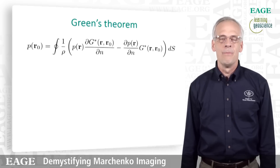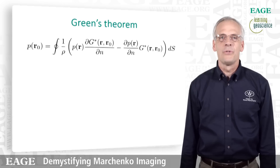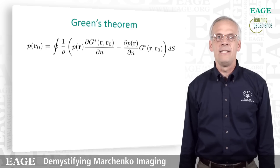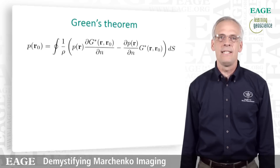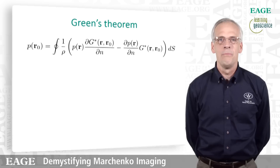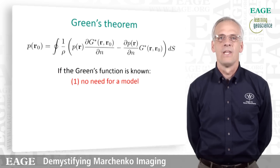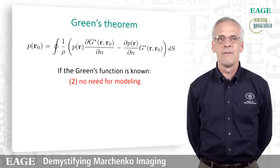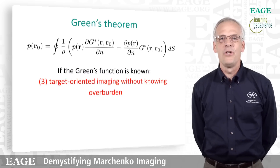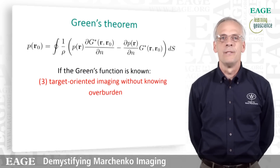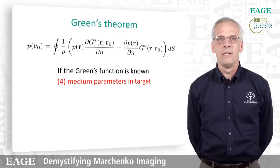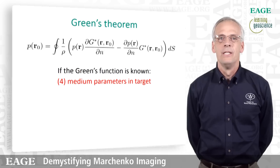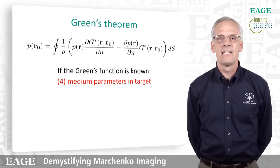The answer really lies in Green's theorem. Green's theorem basically states that if we know a wave field on a boundary and we know the derivative of the wave field on a boundary, and if we know the Green's function, then we can compute the wave field everywhere in the interior. So we don't need to know a model to take the data from our acquisition surface to the interior of the medium — we just need to know the Green's function. If we know the Green's function, we can do target-oriented imaging without knowing the overburden. Since we can construct the wave field everywhere inside the medium, we can stick it into our wave equation and immediately get our medium parameters.